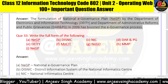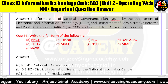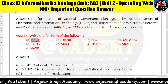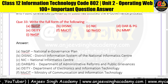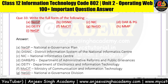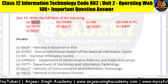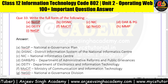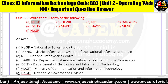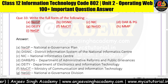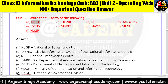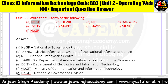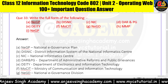Question number 33: write the full form of the following. This is a very important question. The abbreviations to define are: NEGP, DISNIC, NIC, DAR and PG, DEITY, MOCIT, NEGD, MMP, and NEGP.